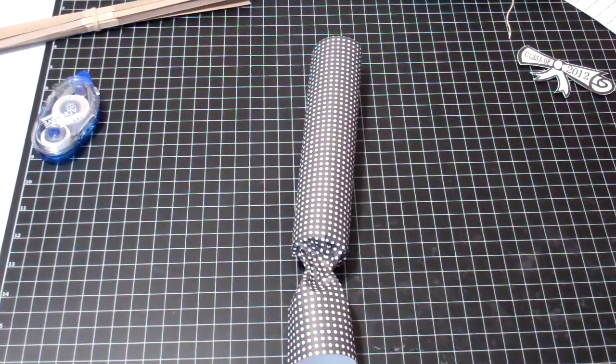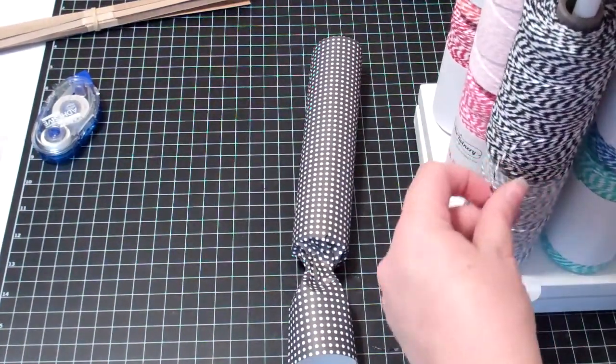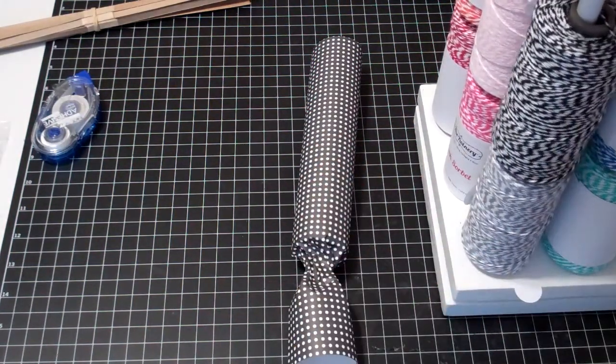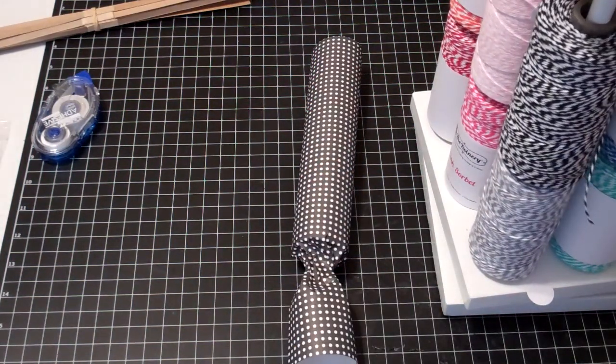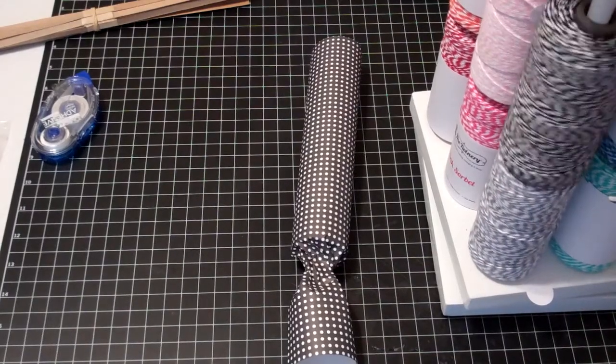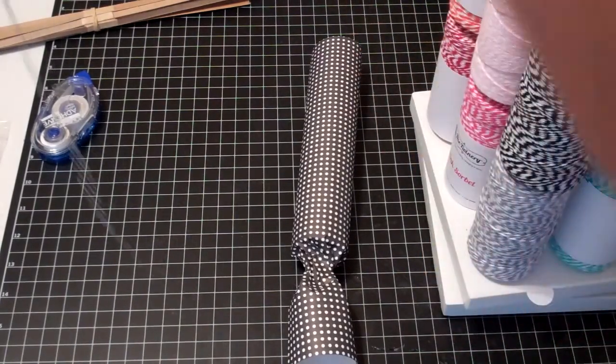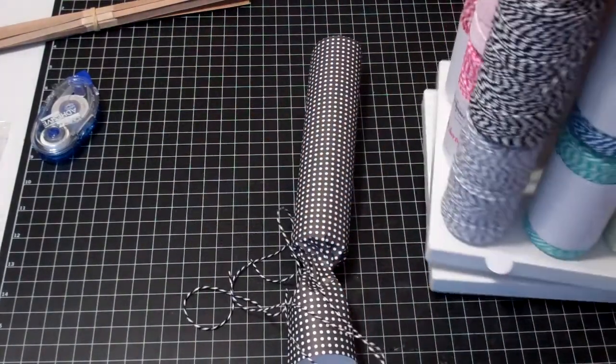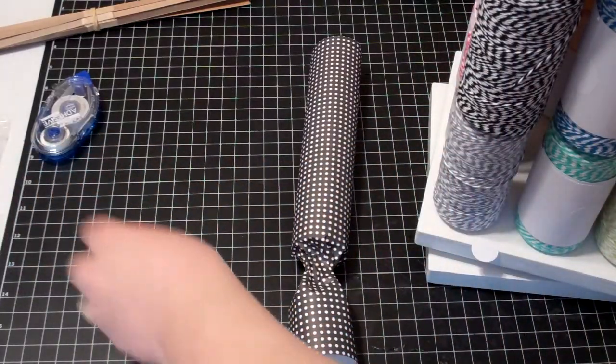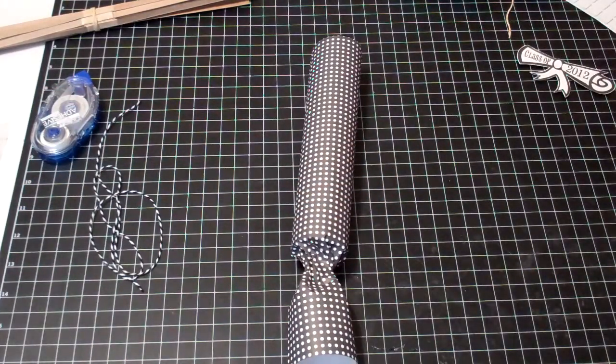You can use ribbon. You can use, in this case, we're going to use some baker's twine. Whatever you want to use to tie this off. It's a little ribbon carousel my husband made me. He's awesome.